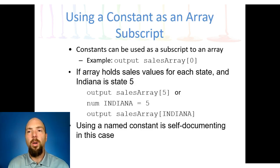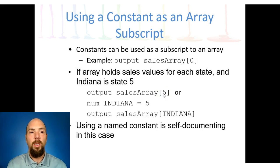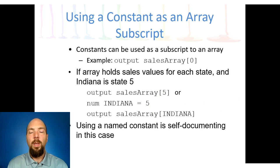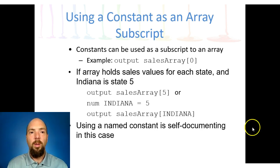We can use arrays for output — for example, outputting whatever value is in sales[5]. We could also declare a constant: INDIANA = 5, and then output sales[INDIANA]. Both give the same result, but using a named constant is considered self-documenting code — someone reading the program can immediately see we're looking at the sales array for Indiana. Using a raw number like sales[5] requires a comment to explain what 5 means.